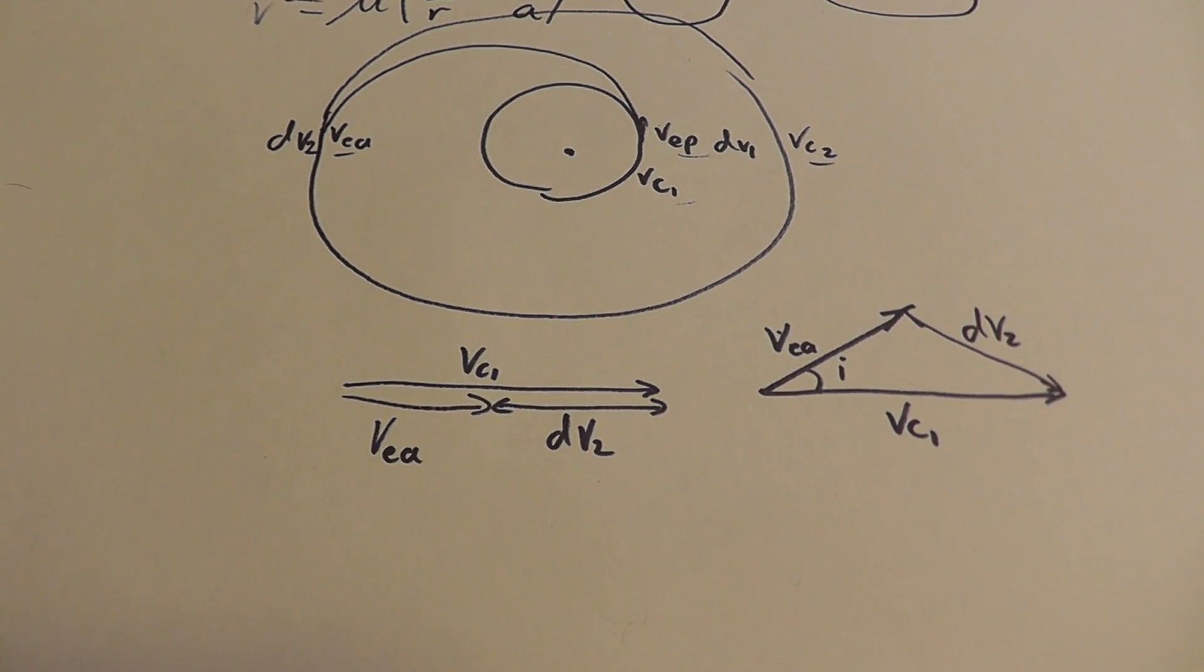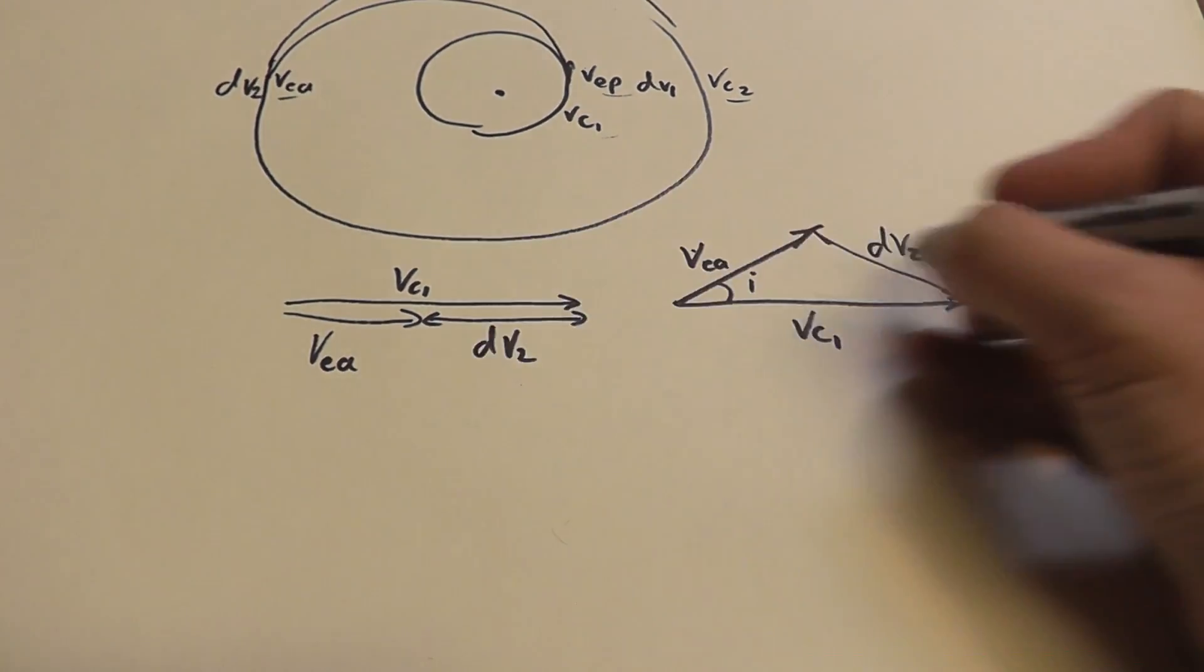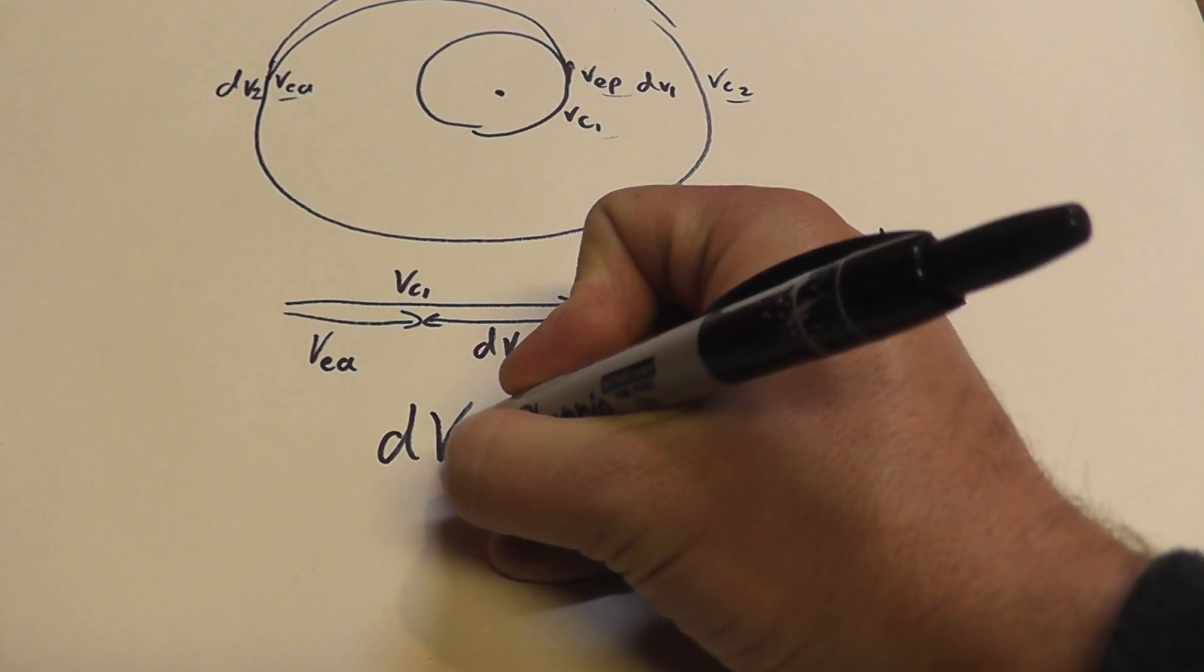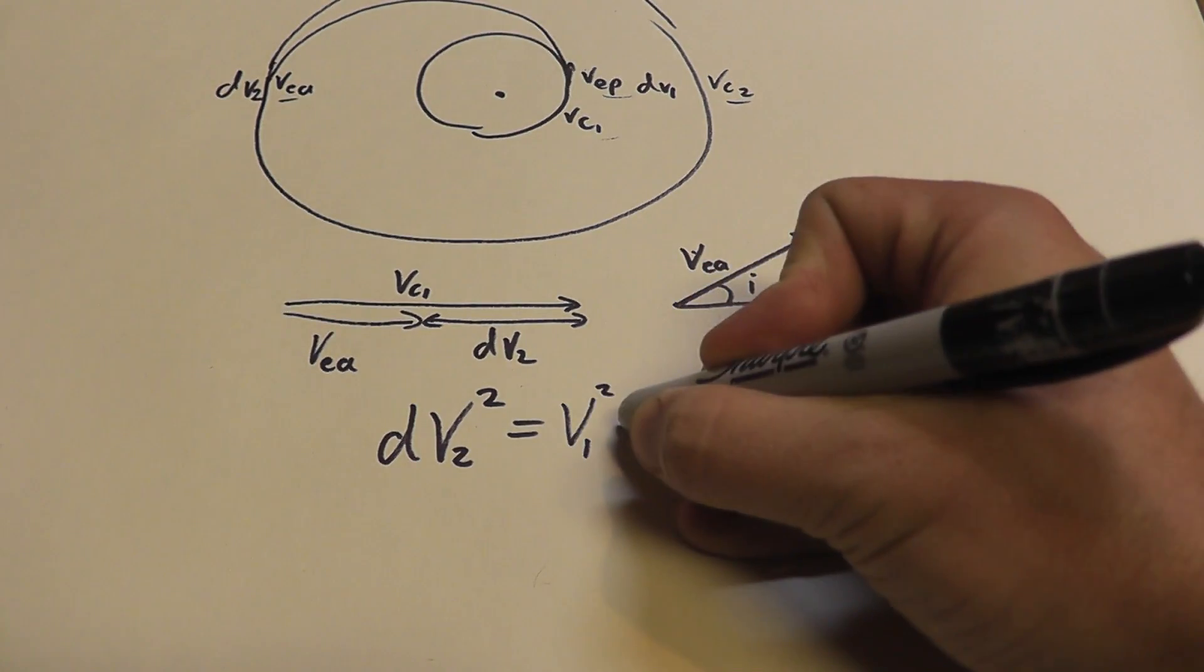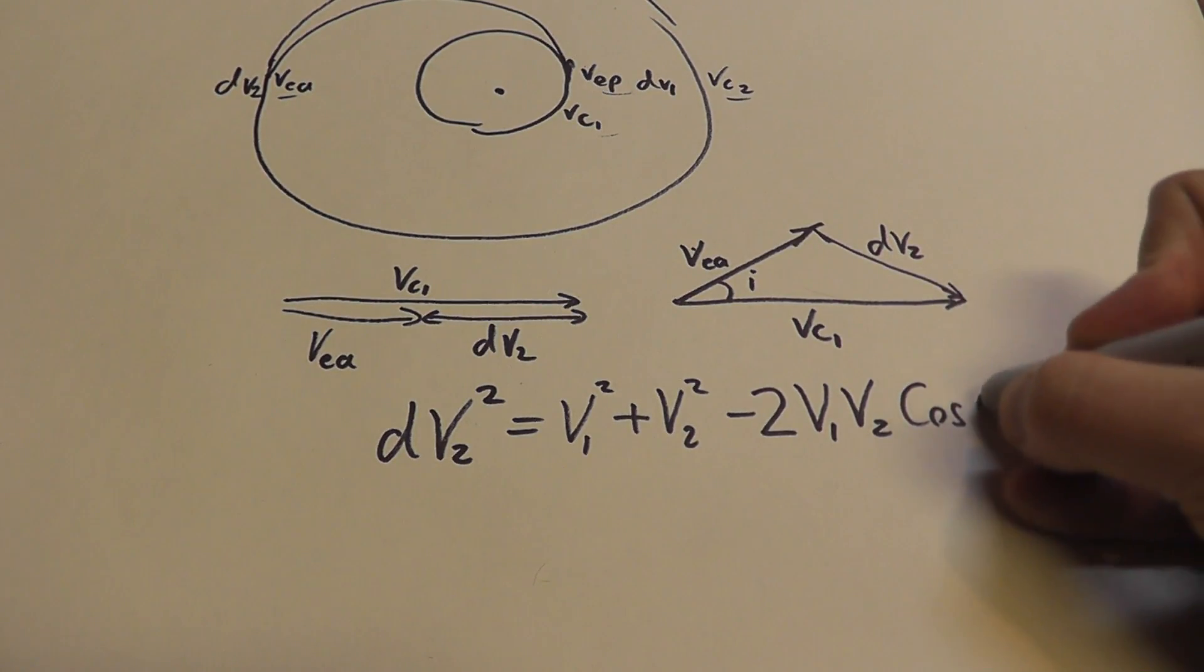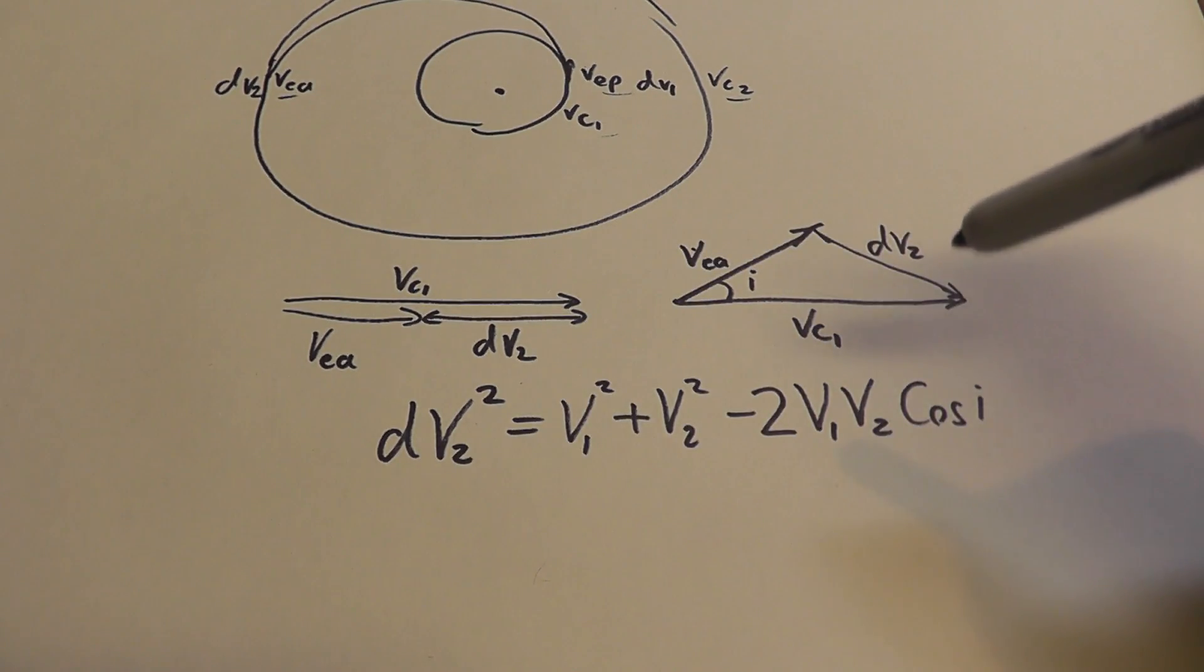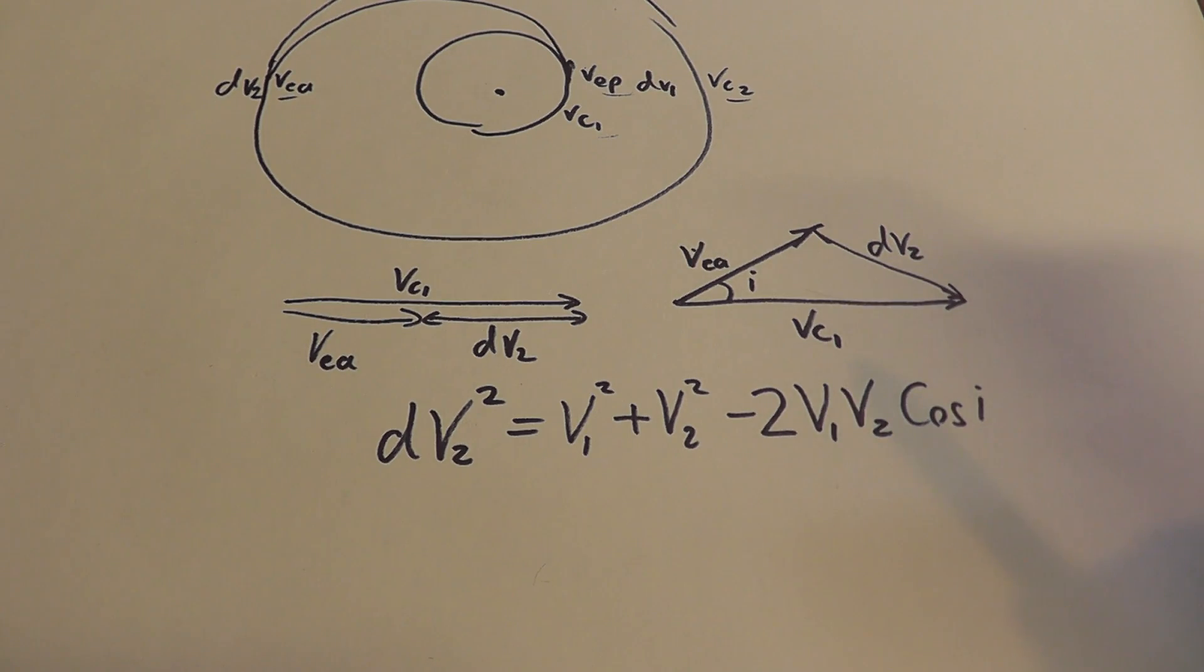And how you figure out how long this is, is you use the cosine rule. The cosine rule says that if you have two adjacent sides of a triangle and the angle, then you can compute this third side by using this relation. So, the cosine rule will say dv2 squared is equal to v1 squared plus v2 squared minus 2v1v2 cosine i. Using this, you can plug in all the values you need and figure out exactly what your delta v will be if you include an inclination change.